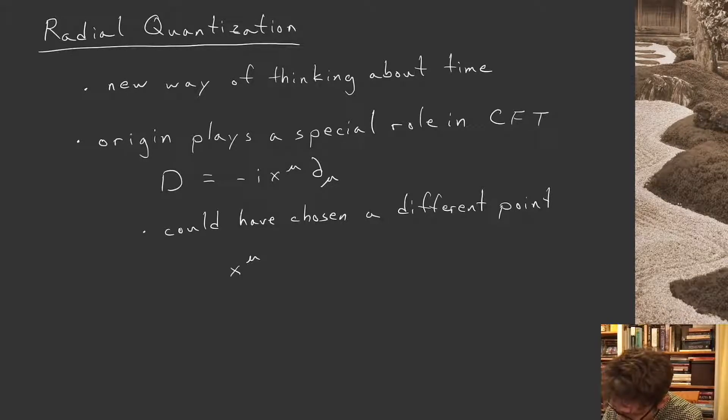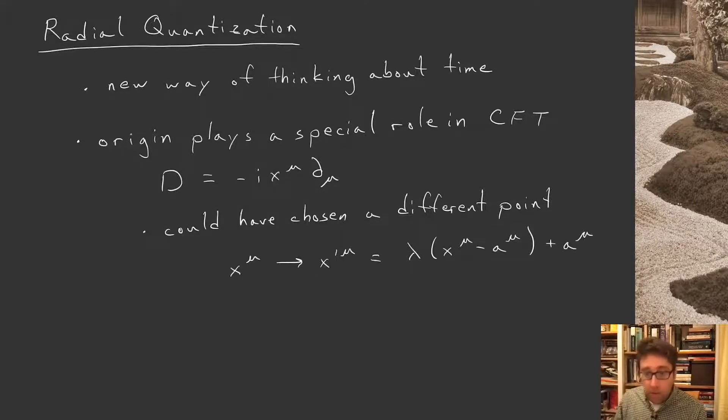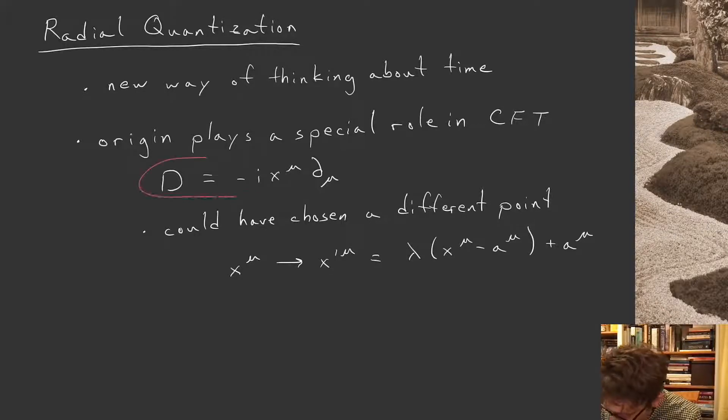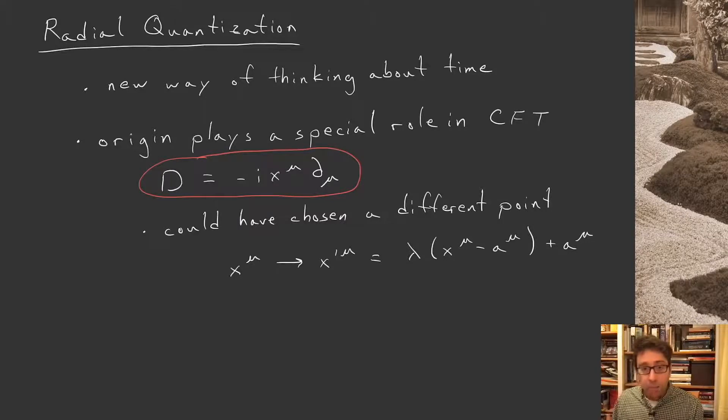We could have defined conformal transformations with respect to some other point that's translated away from the origin, x^μ - a^μ and then plus a^μ back. So if you plug in the point a^μ, you get back the point a^μ. But if you plug in a different point, you'll get some scale transformation about this new origin. But we don't do that. We choose this D as our generator. And because of that, the origin plays a special role.